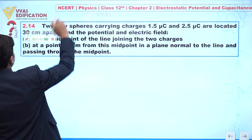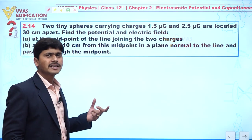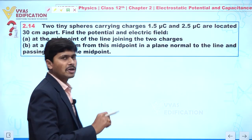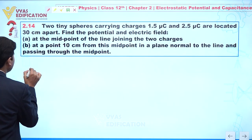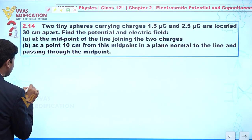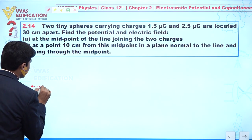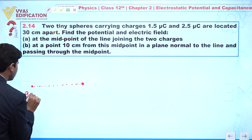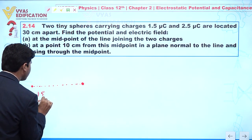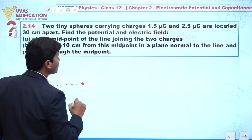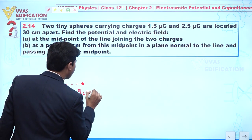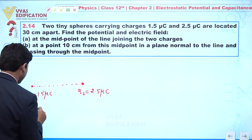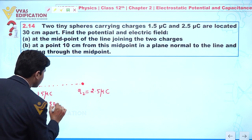Since we have two tiny spheres, we can assume them as point charges. The charges are 1.5 microcoulomb and 2.5 microcoulomb. Let's suppose we have two small spheres: q1 is given as 1.5 microcoulomb and q2 is given as 2.5 microcoulomb. The distance between the two charges is given as 30 centimeters.